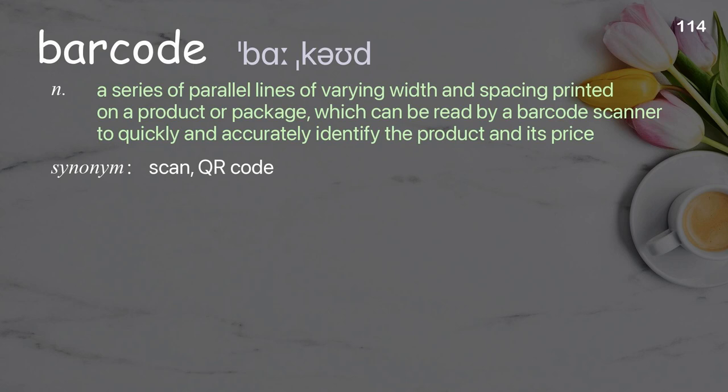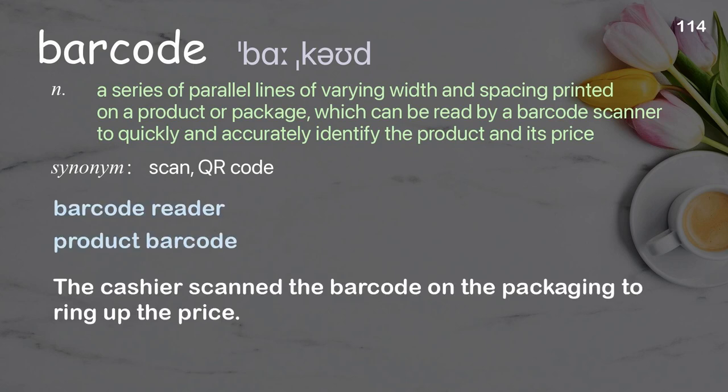Barcode: a series of parallel lines of varying width and spacing printed on a product or package, which can be read by a barcode scanner to quickly and accurately identify the product and its price. The cashier scanned the barcode on the packaging to ring up the price.